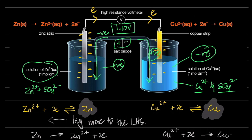We tend to make salt bridges from the most soluble ions because we don't want the salt bridge causing any precipitation. The best way is to use group 1 nitrates — for example, potassium nitrate or sodium nitrate — because all group 1s are soluble and all nitrates are soluble, so they won't precipitate anything.